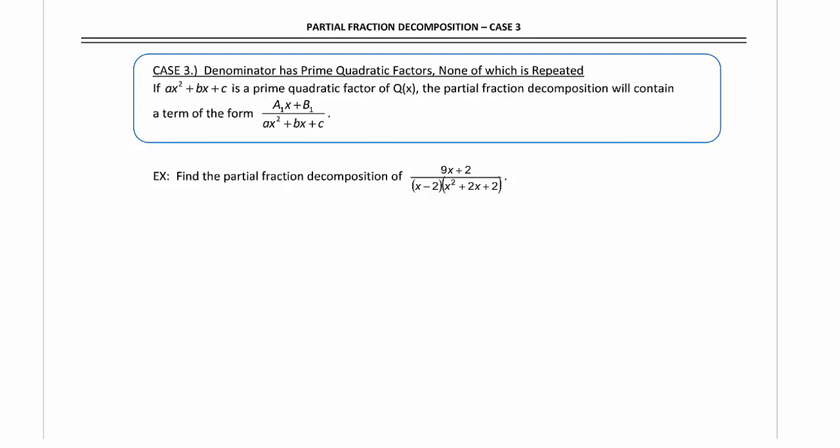If ax squared plus bx plus c is a prime quadratic factor of q of x, the partial fraction decomposition will contain a term of the form ax plus b over ax squared plus bx plus c.